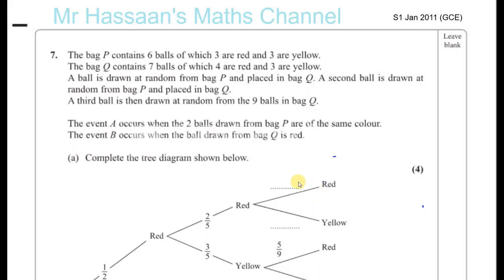Question number 7 from S1, January 2011 GCE. This is an S1 statistics question about probability. Bag P contains 6 balls of which 3 are red and 3 are yellow. Bag Q contains 7 balls of which 4 are red and 3 are yellow.